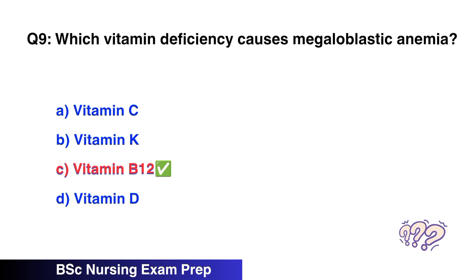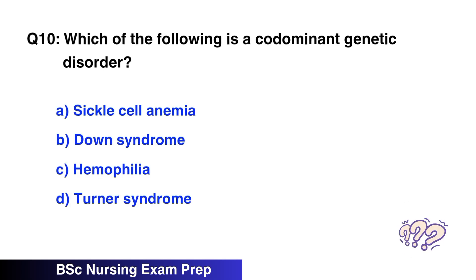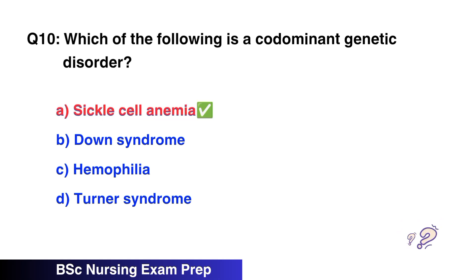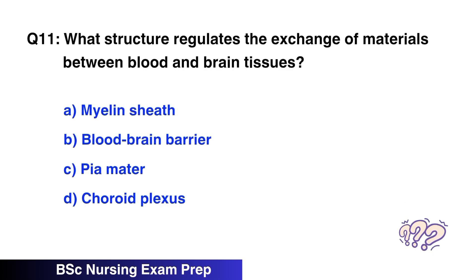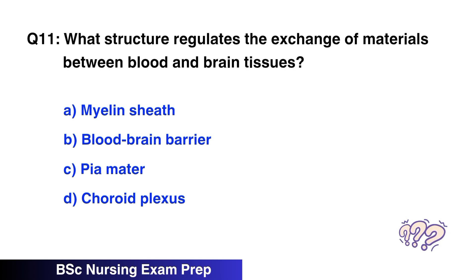Question number 9: Which vitamin deficiency causes megaloblastic anemia? The right option is C, vitamin B12. Question number 10: Which of the following is a codominant genetic disorder? The right option is A, sickle cell anemia.